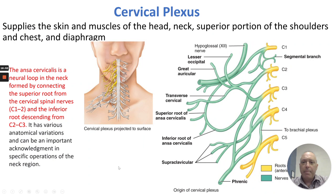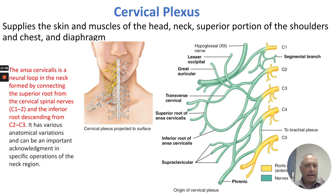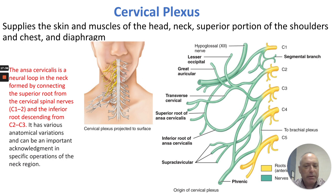The cervical plexus is split into roots and nerves. Five roots branch off to the lesser occipital, the greater auricular, transverse cervical, superior and inferior roots of the ansa cervicalis, supraclavicular, and phrenic nerves. The ansa cervicalis is a neural loop in the neck formed by connecting the superior root from C1 and C2 and the inferior root from C2 and C3. It has various anatomical variations and is important in operations of the neck region.